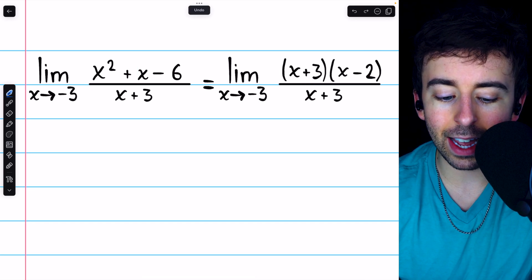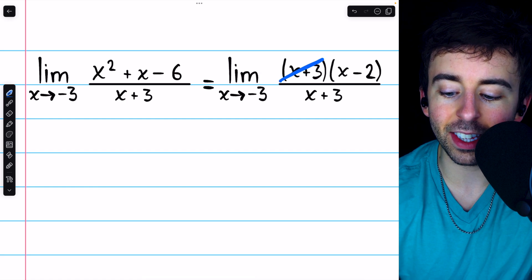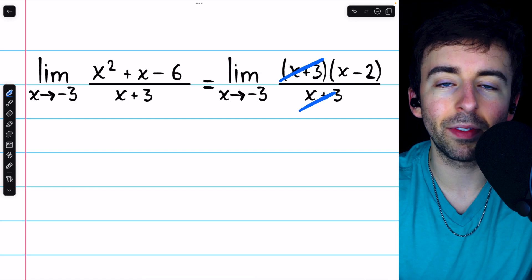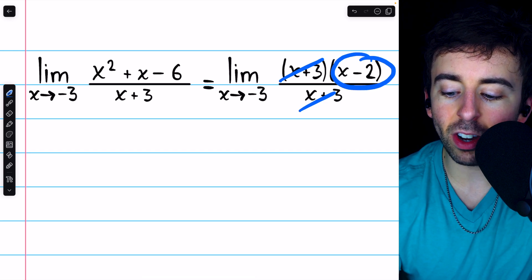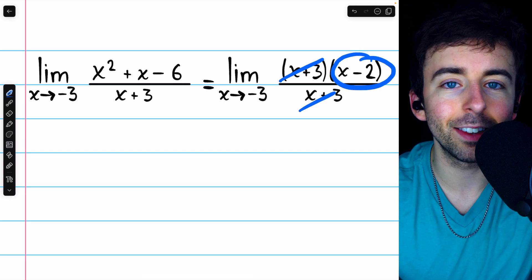And once we see that, notice that we can cancel the x plus 3 with the x plus 3. We have an x plus 3 in the numerator and denominator. Those cancel out and just leave behind x minus 2.